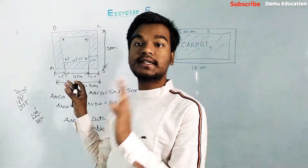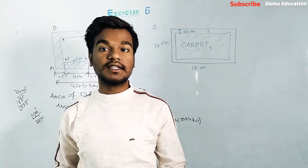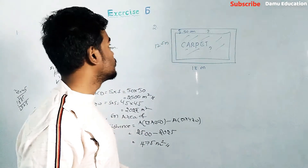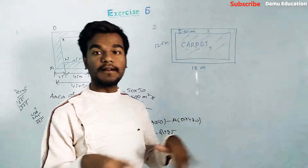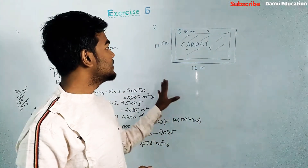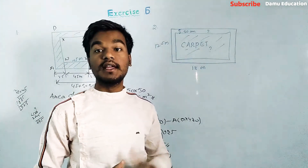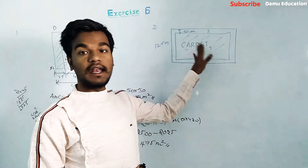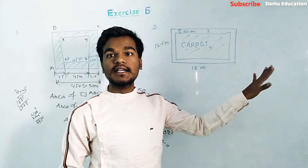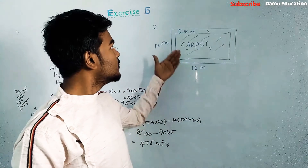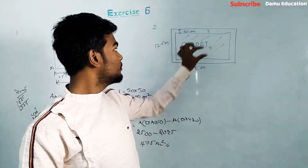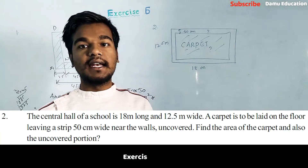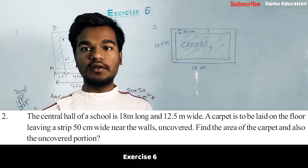The second question: a carpet is laid inside a central hall that is 18 meters by 12.5 meters. The carpet is placed leaving a 50 centimeter strip uncovered around the corners. We need to find the uncovered portion and the area of the carpet.